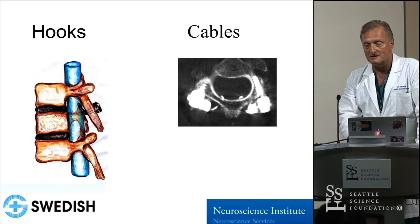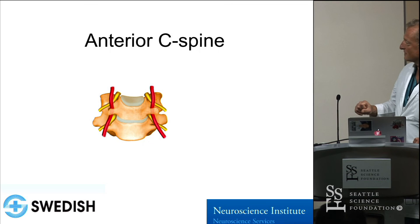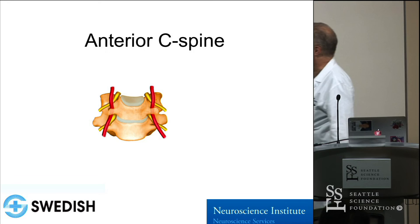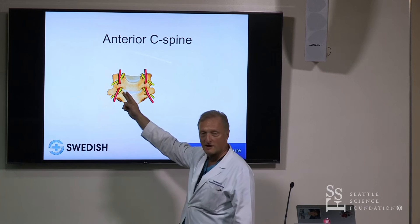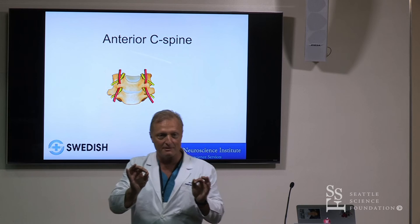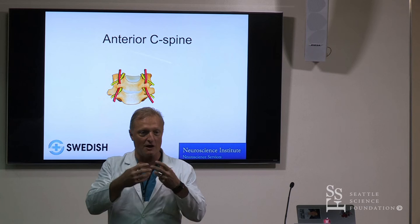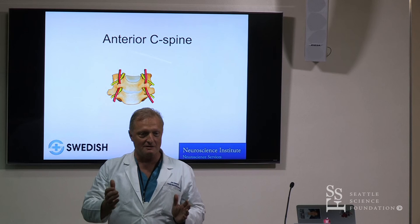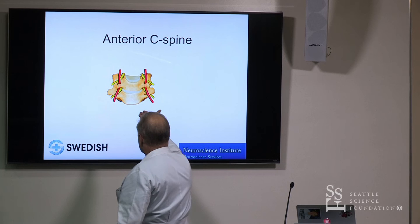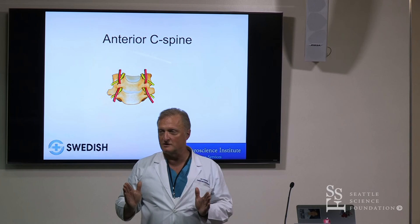One final point on anterior cervical spine: how to ensure you're where you need to be. I recommend the Penfield IV. Identify the uncinate processes left and right, properly elevate the longus colli, put the Penfield IV left and right — you then know exactly where the midline is. If there are osteophytes, resect them; they should not throw you off. If you have no fluoroscopy, take the floor subperiosteally on the lateral surface of the uncinate process — you'll know where midline is and won't stray into the vertebral artery during decompression.